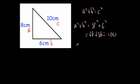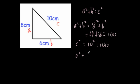Then let's work out c squared, where c squared equals 10 squared, which is equal to 100. Therefore, a squared plus b squared does equal c squared. Therefore, it is a right-angled triangle.